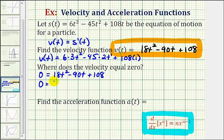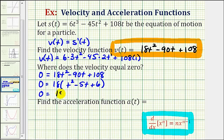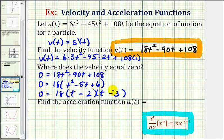We'll start by factoring out the greatest common factor, which is 18. So we'll have zero equals 18 times the quantity t squared minus 5t plus 6. We'll factor again — this factors into two binomial factors. The factors of positive six that add to negative five are negative two and negative three, giving us t minus two times t minus three. This product equals zero when t equals two or t equals three, which is when the velocity is equal to zero.